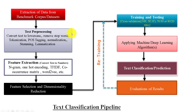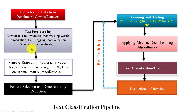After data extraction, the next process is text preprocessing. This process is very important. In this process, we perform different preprocessing tasks such as converting text to lowercase, removing stop words, performing tokenization, performing part-of-speech tagging, text normalization, stemming, and lemmatization, etc. There can be some other tasks like removing hypertext, converting special symbols into text, and so on.